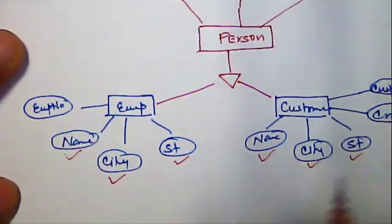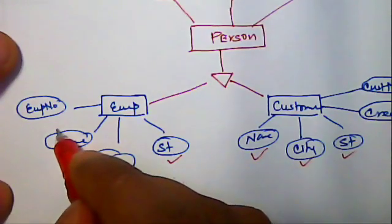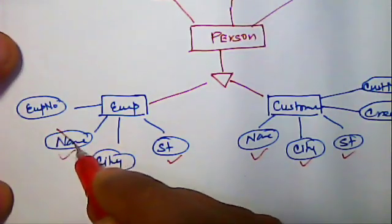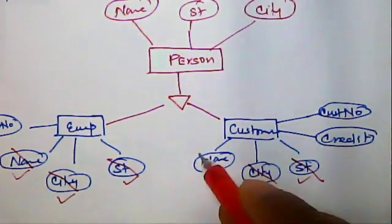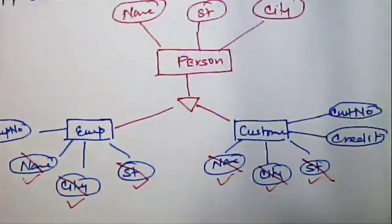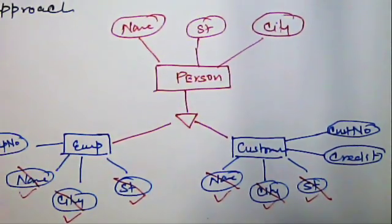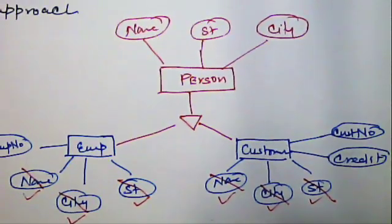And then what do we do? We remove these attributes which are there in the person which has been taken in the person. So now we ended up with the same ER diagram which we had in case of specialization.